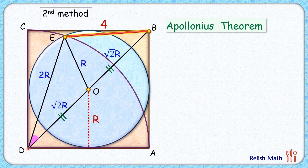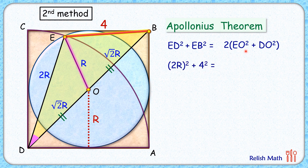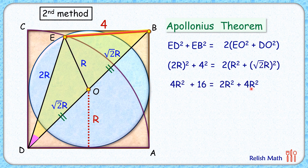In our original figure, DB is the diagonal of the square and O is the midpoint, so in triangle DEB, EO is the median. Applying Apollonius theorem: ED squared plus EB squared equals 2 times (EO squared plus DO squared). Putting in the values: (2r) squared plus 4 squared equals 2 times (r squared plus (root 2r) squared). This gives 4r squared plus 16 equals 2r squared plus 4r squared, and solving gives r equals 2 root 2 centimeters.